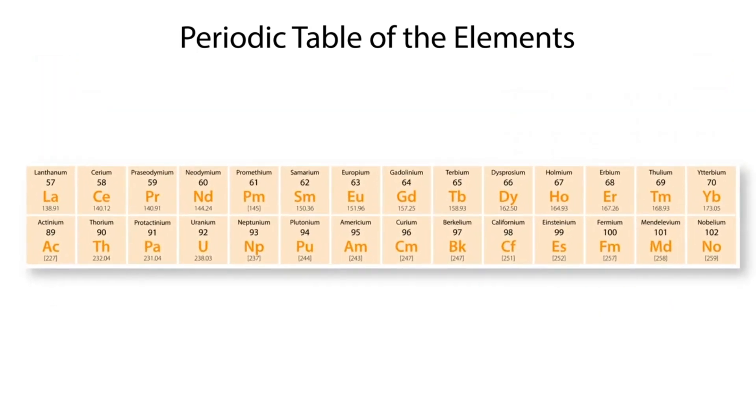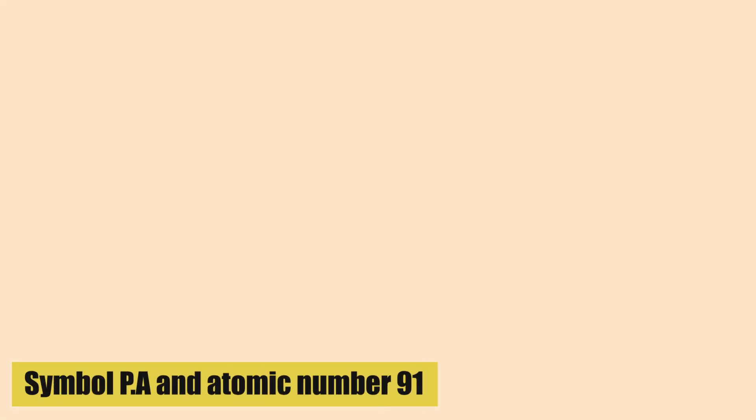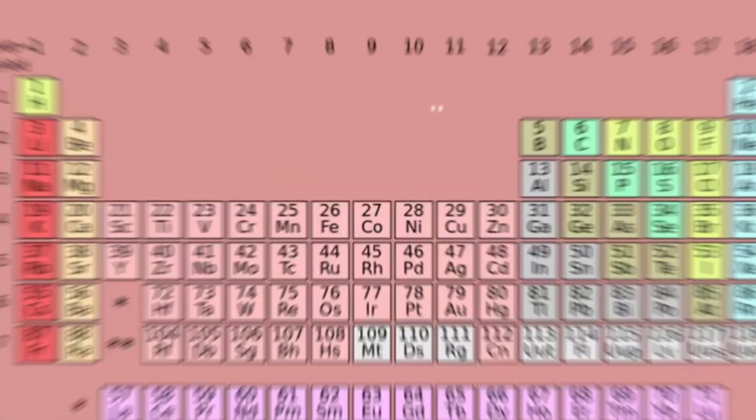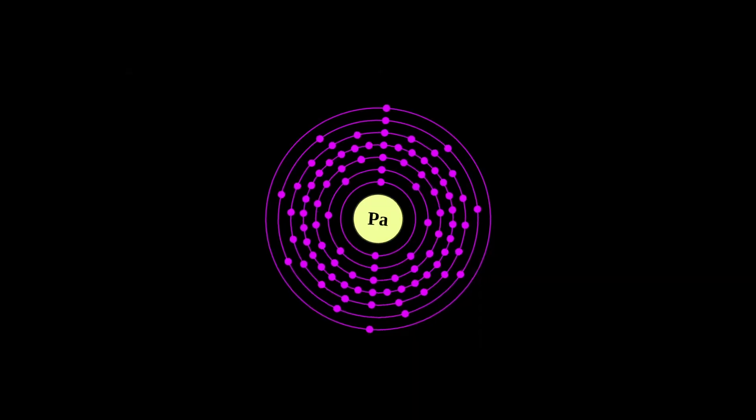Protactinium is a chemical element with the symbol PA and atomic number 91. It is a highly radioactive metal that belongs to the actinide series of elements.